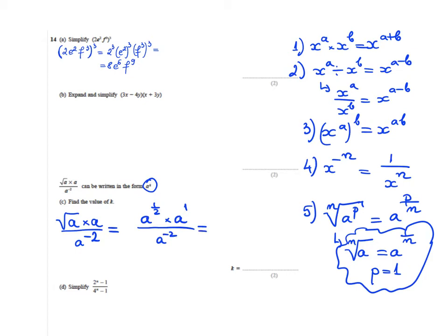Now I'm going to apply rule number 1. So it's a^(1/2 + 1) over a^(-2), which is a^(3/2) over a^(-2).